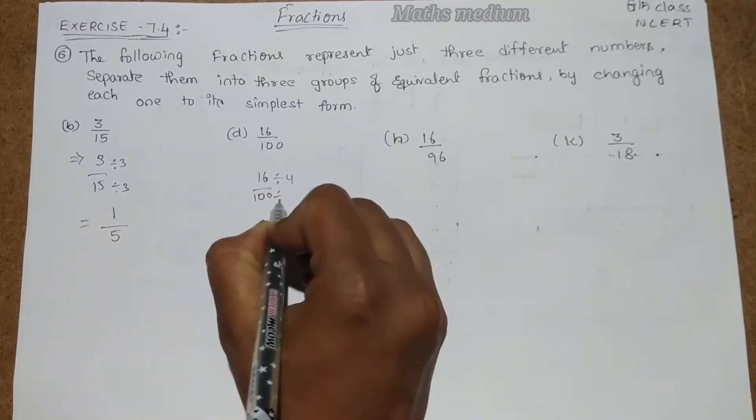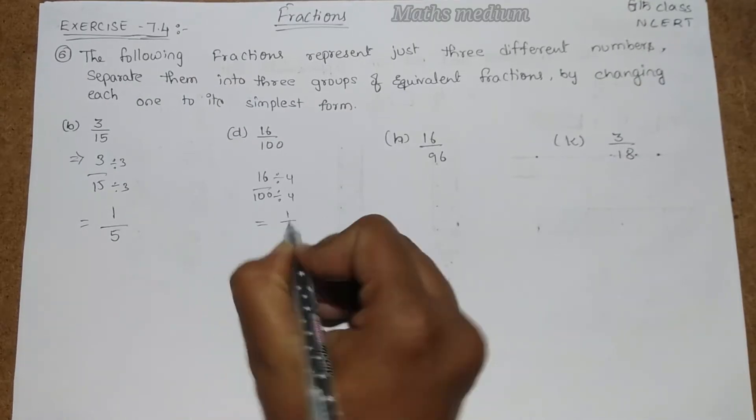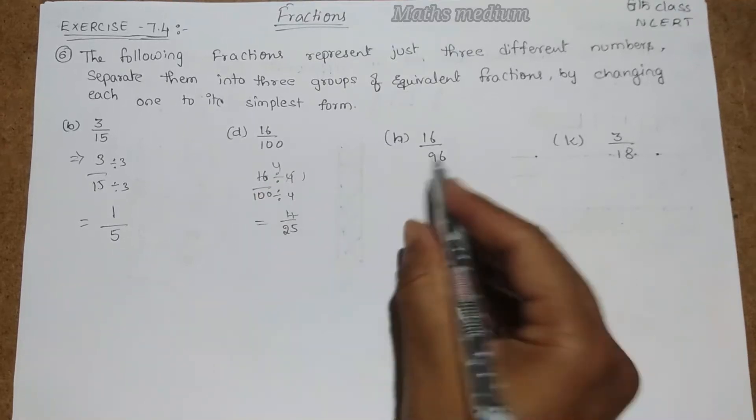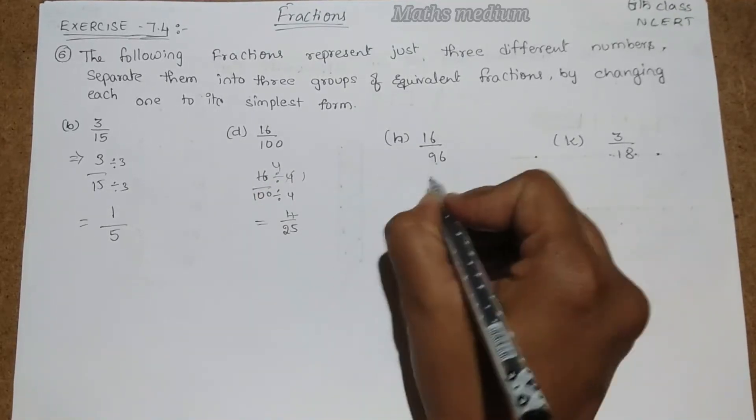So here 16 by 96, it is divided by 16 itself also. So 16 ones are 16, 16 sixes are 96. Coming to this one, this is 3 by 18.